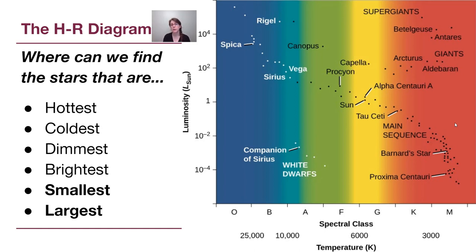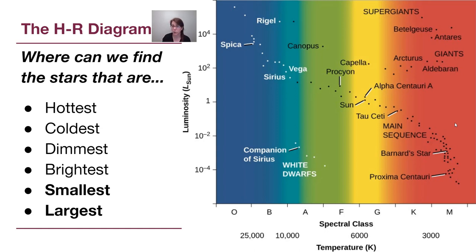Dimmest stars means very low luminosity, so we are talking about the bottom part of the diagram. We can find very dim white dwarfs in the bottom left, and very dim main sequence stars in the bottom right — dim stars simply means the bottom of the diagram. The brightest stars are at the very top. It is possible to have a very bright high-luminosity main sequence star like Spica or Rigel, but also a very bright supergiant like Betelgeuse or Antares. Bright simply means high up on the diagram.